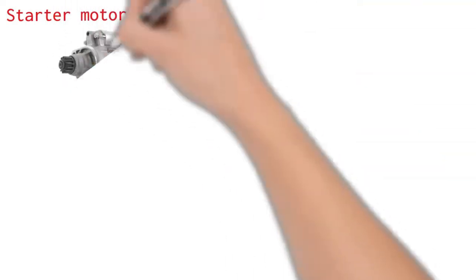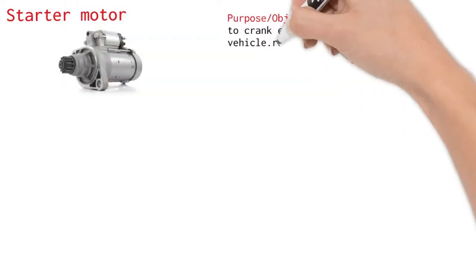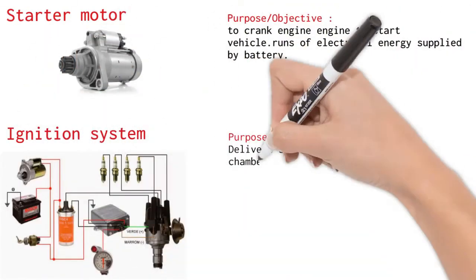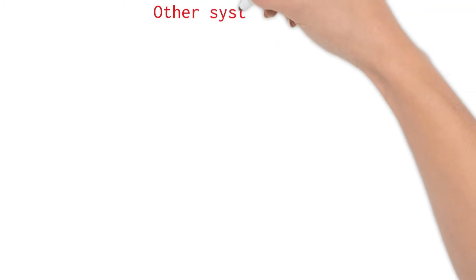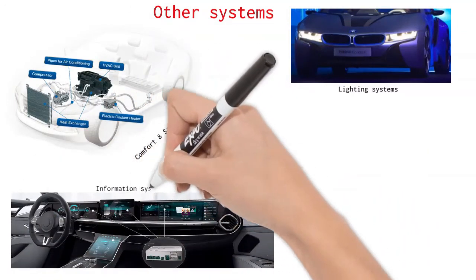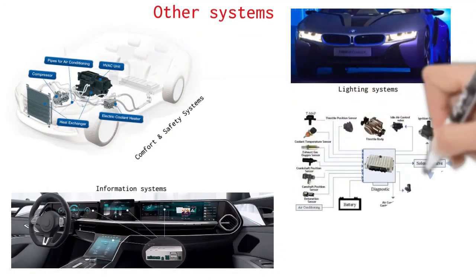Starting motor requires electrical energy to crank engine. Ignition system requires electrical energy to deliver spark to engine cylinders. Other systems. Other systems include: Lightning systems, Comfort and safety systems, Security systems, Infotainment systems, Engine and vehicle management systems.